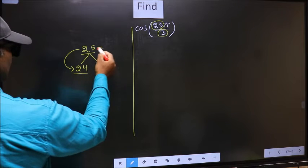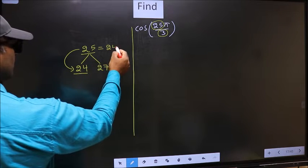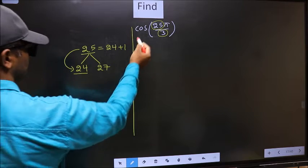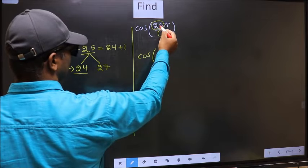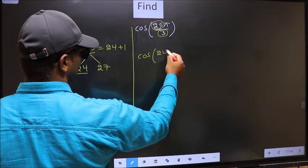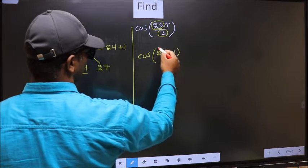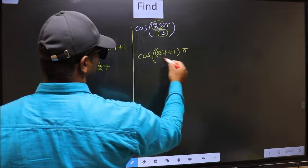So now 25 should be written as 24 plus 1. So this will become cos. In place of 25, now you write 24 plus 1, π/3.